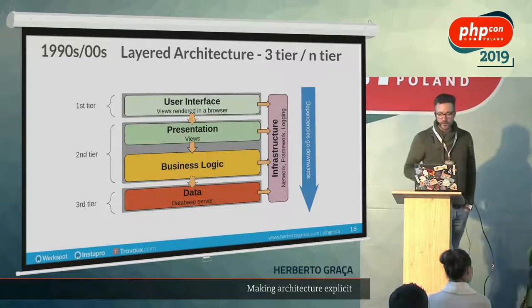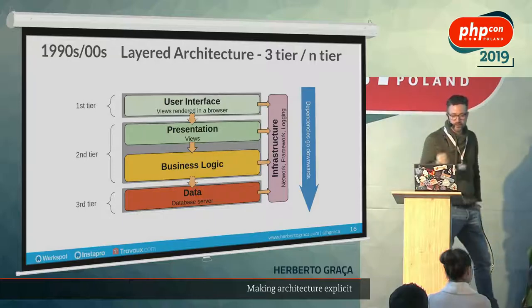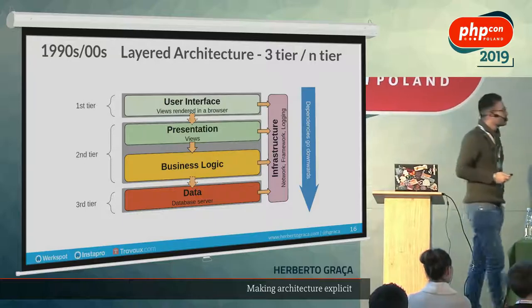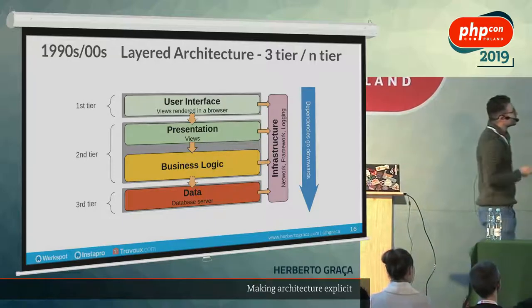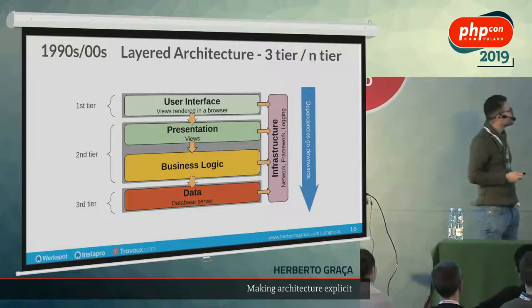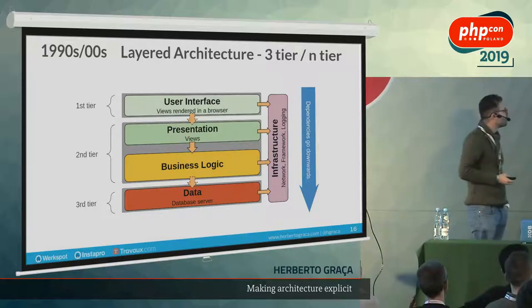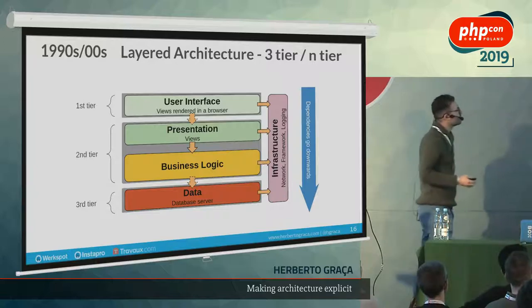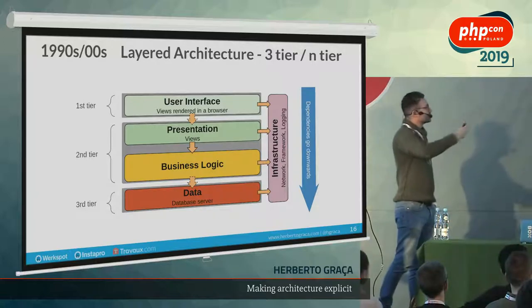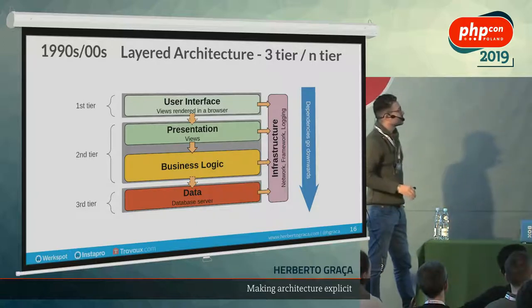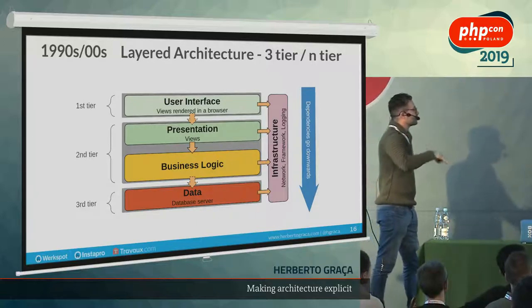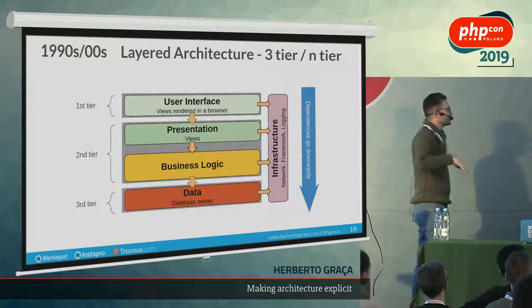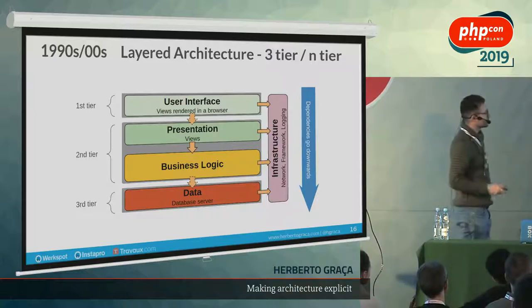In the 90s we had layered architecture — in this case three-tier architecture — where dependencies are vertical: user interface depending on presentation, depending on business logic, depending on the database.